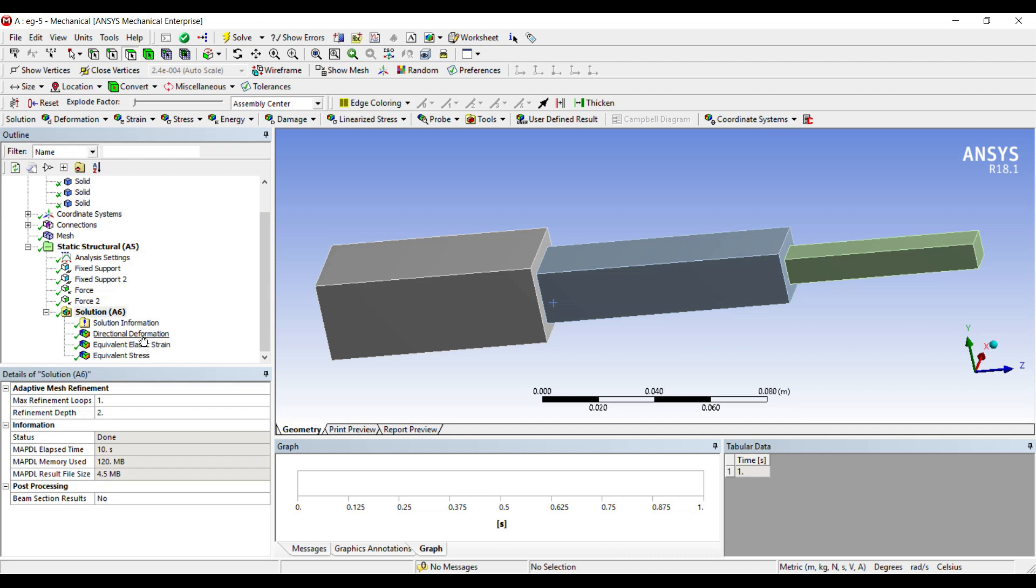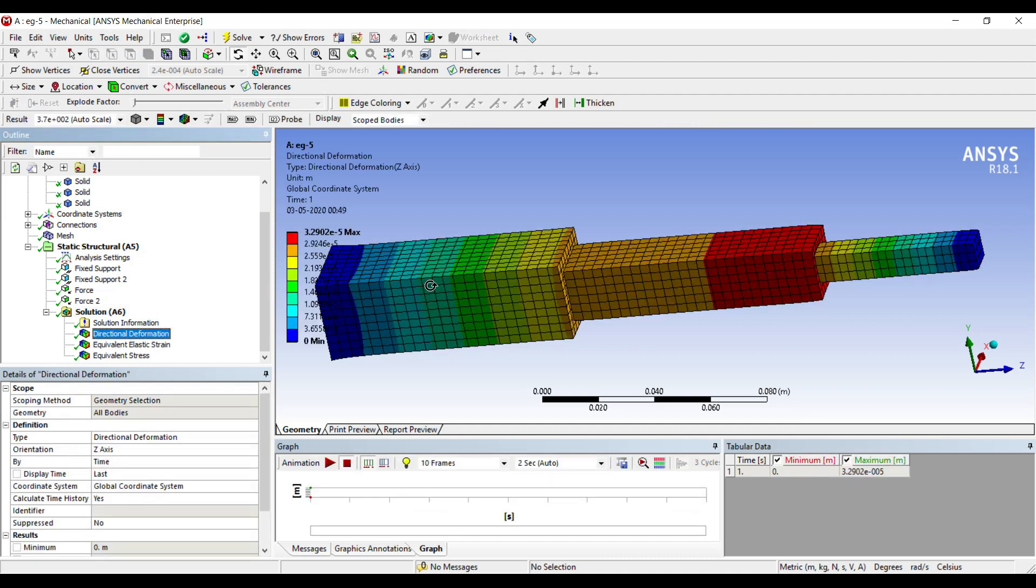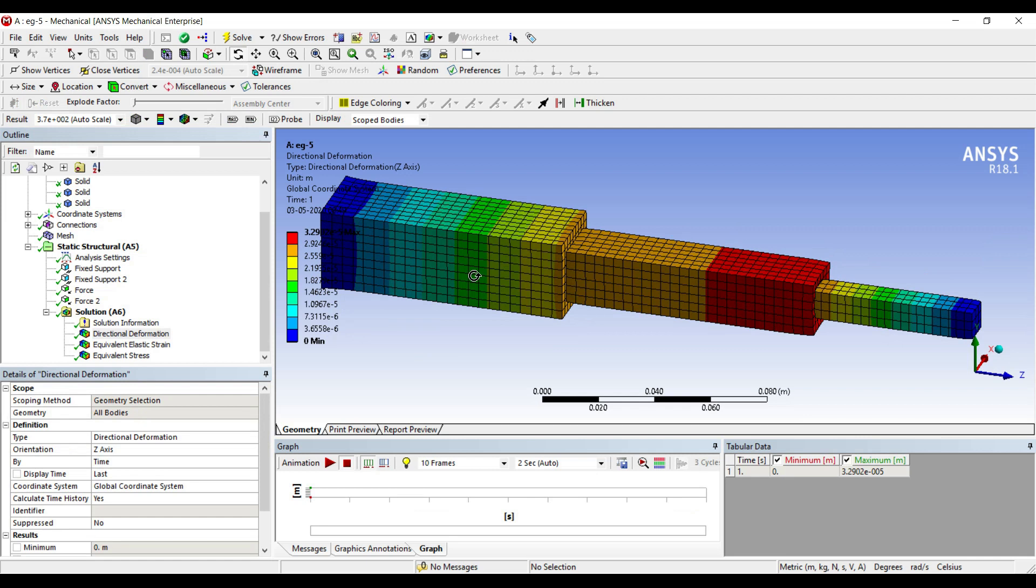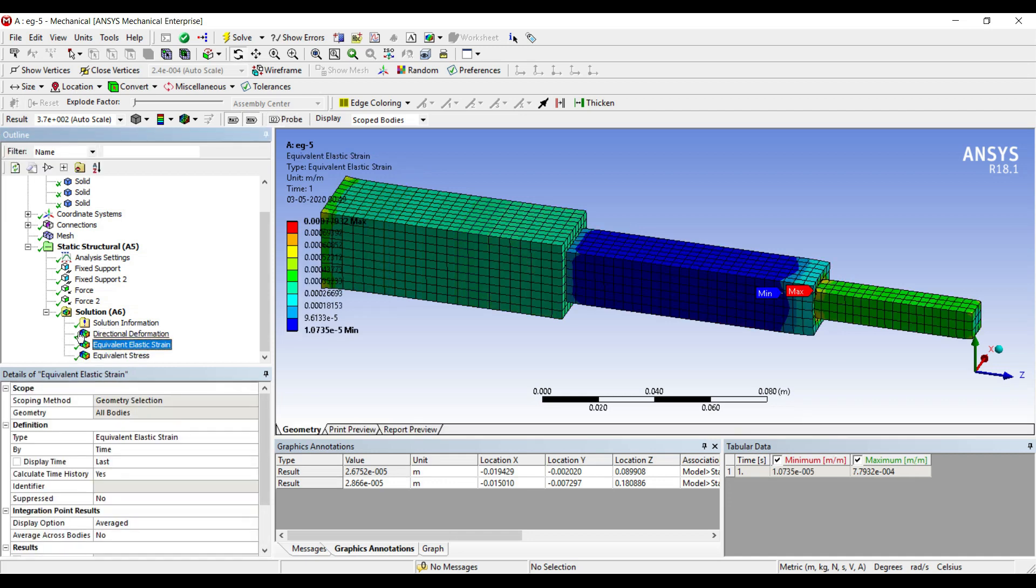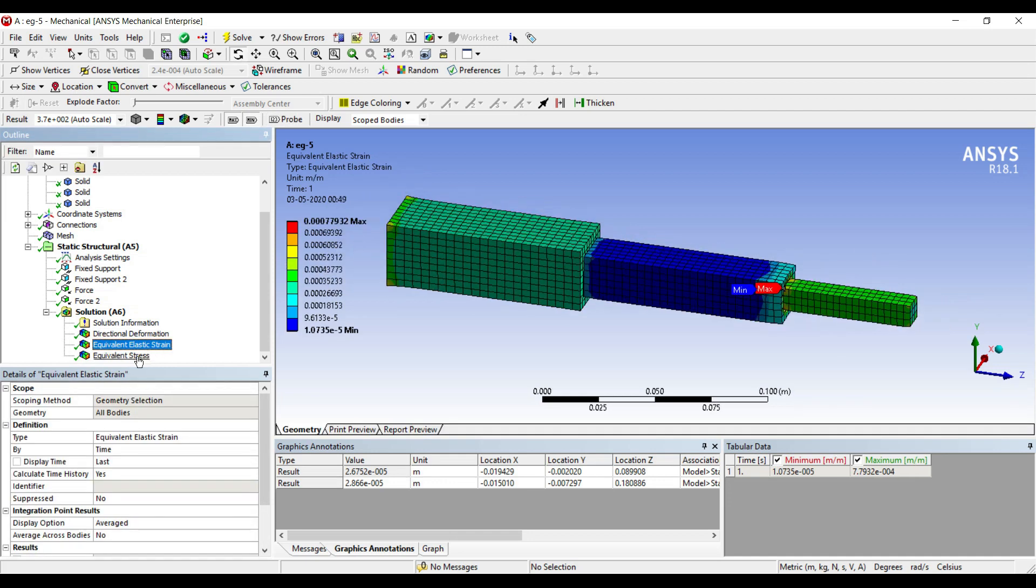I will go to directional deformation to see the result. I click on probe, max min. I can see the maximum minimum value here, and by clicking on probe, I can go to any face and get the value there. This is the value for elastic strain, and these are the values obtained for equivalent stress.